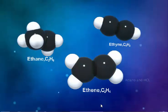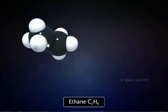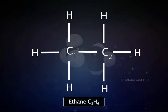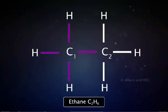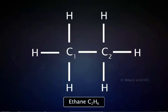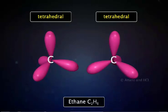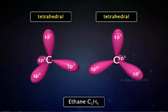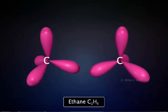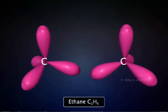Let us examine the bonding in three molecules: ethane, ethene, and ethyne. This is the Lewis structure of ethane. There are four VSEPR pairs of electrons around carbon 1, and four VSEPR pairs around carbon 2 as well. The VSEPR model predicts that the geometry around each carbon atom is tetrahedral. According to valence bond theory, four sp3 hybrid orbitals have a tetrahedral arrangement. The bonding in ethane can be explained if we assume that each C atom is sp3 hybridized.